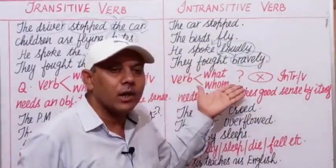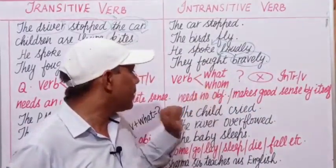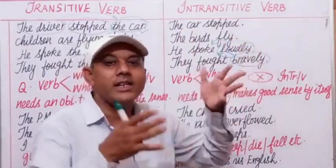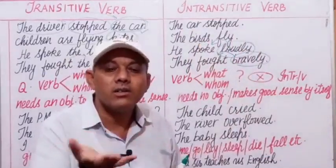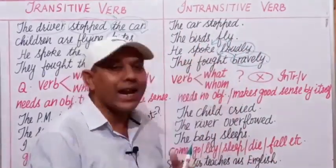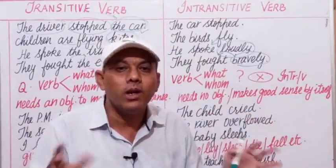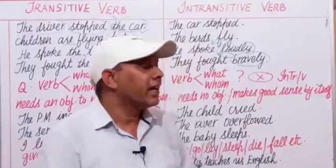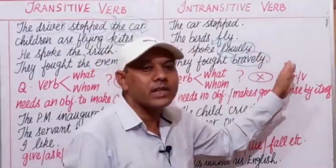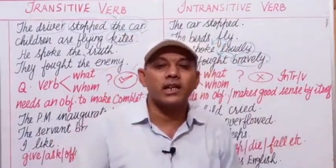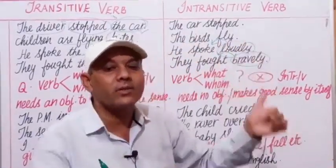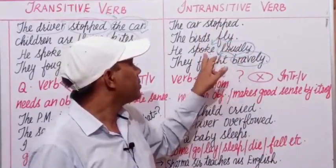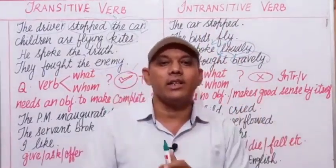When we get no answer: 'The car stopped' — stopped what? No answer. 'The birds fly' — fly what? No answer. 'He spoke loudly' — spoke what? No answer. 'They fought bravely' — fought whom? Still no answer. There is no object to these verbs and these sentences need no object to complete their sense. So the verbs stop, fly, spoke, and fought are used intransitively here.